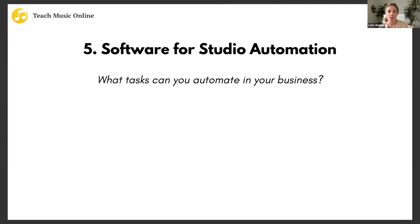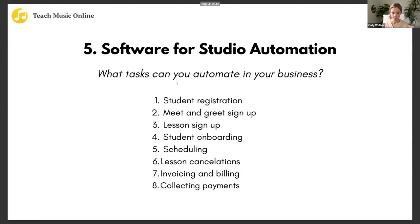Let's talk about our last big topic for today: software to help automate things in your studio. Automate means you are outsourcing a task — something you would normally have to do, but now you don't have to do anymore. Here are a few things you can automate as a business owner: student registration, meet and greet, new lesson sign-up, new student onboarding, scheduling, lesson cancellations, invoicing and billing, and collecting payments.